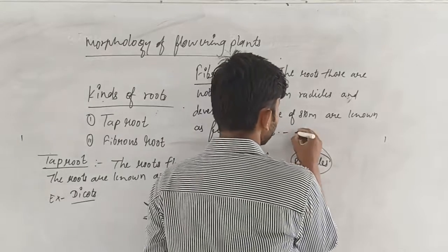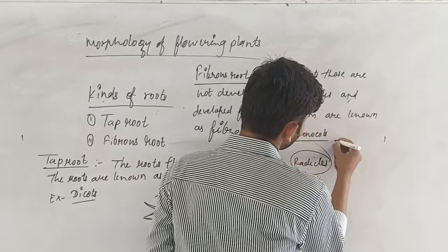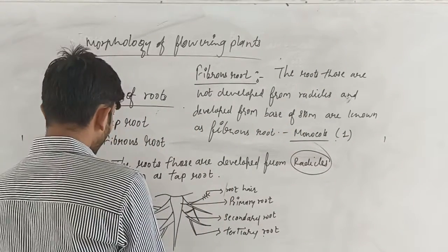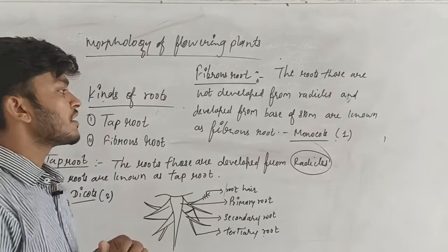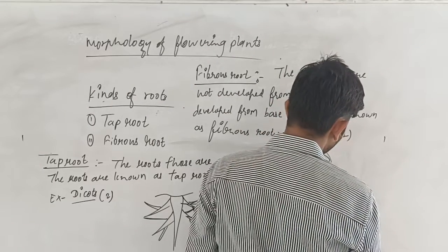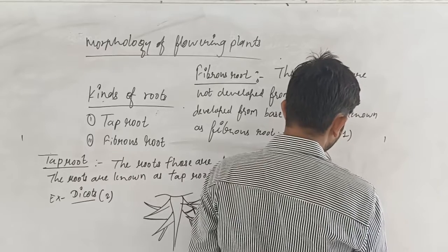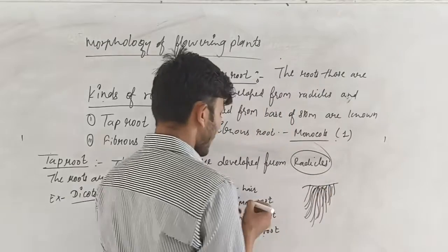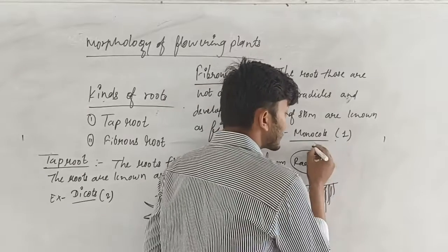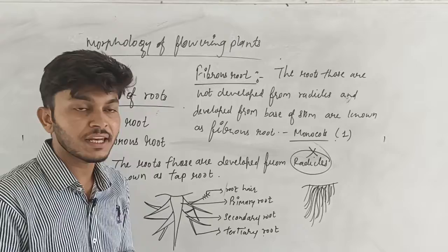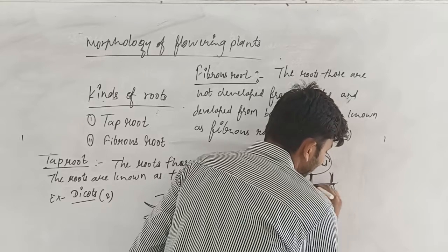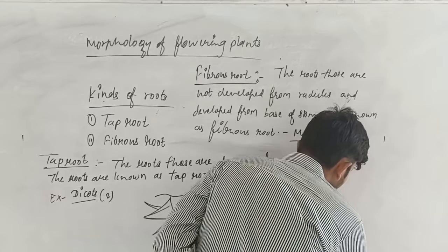Examples are known as monocots. It means the plants are bearing one cotyledon. These are known as monocots. In all monocots, the roots are known as fibrous roots. Just like you can talk about wheat — we are unable to identify which one is primary root and which one is secondary root. These are developed from the base of the stem.